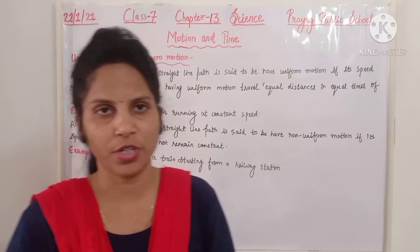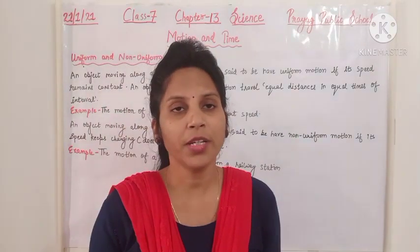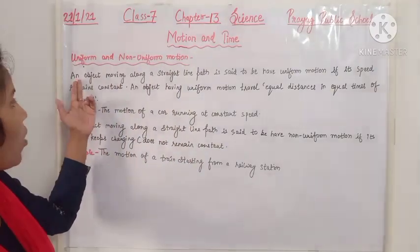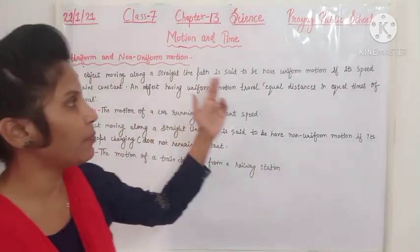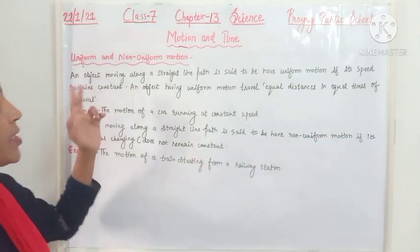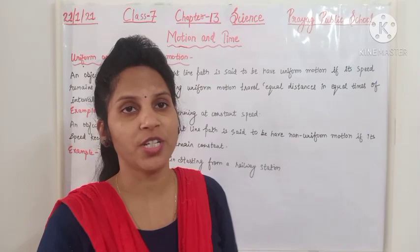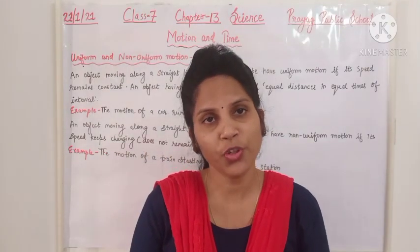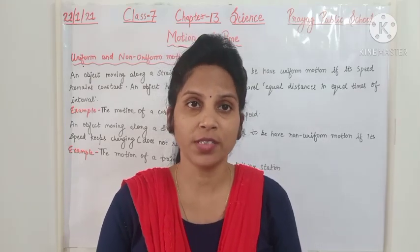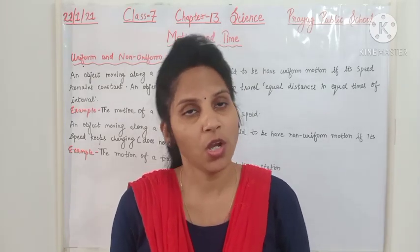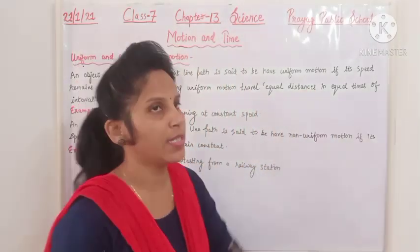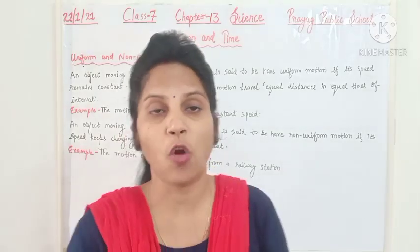What is uniform motion and what is non-uniform motion? Uniform motion: an object moving along a straight line path is said to have uniform motion if its speed remains constant. When it moves with a constant speed, its speed does not change. An object having uniform motion travels equal distances in equal intervals of time.